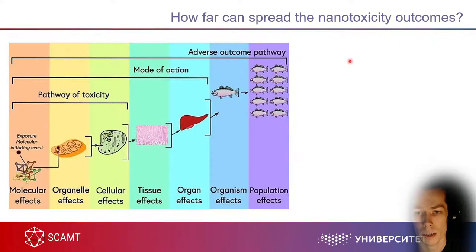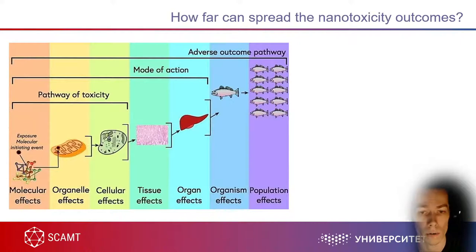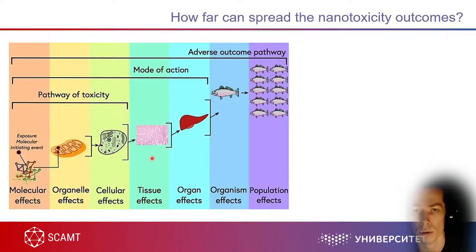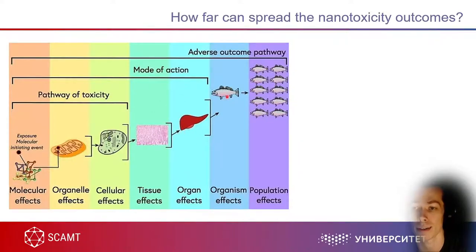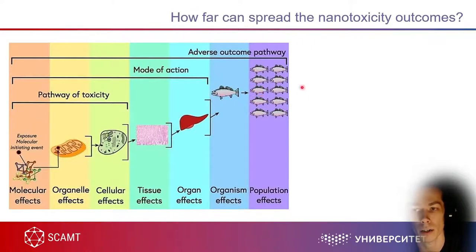How far can the nanotoxicity outcomes spread? Nanotoxicity can spread from a molecule level all the way to an organelle level — organelles like the nucleus or mitochondria can be affected. It can then spread to the cell level and cause cell death, which will damage tissue. Tissue damage causes inflammation that affects the whole organ. This can lead to the death of the whole organism, and death of one organism can lead to the death of many organisms — a whole population may die.